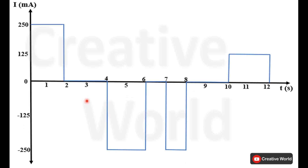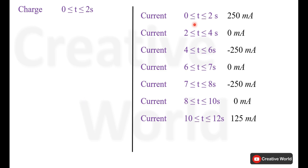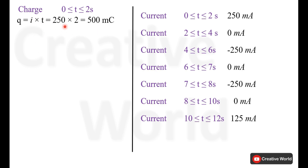Here is the plot of the calculated current. In order to calculate charge, we will use the simple formula: charge q is equal to current multiplied by time. Between specific time intervals, the currents are calculated and we use these current values multiplied by the time intervals. For 0 to 2 seconds, time is 2 seconds and the current is 250 milliamperes, so the charge will be 500 millicoulombs.